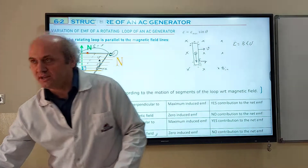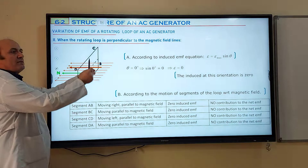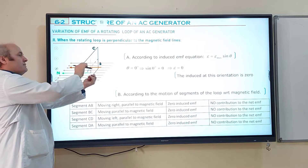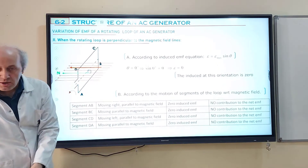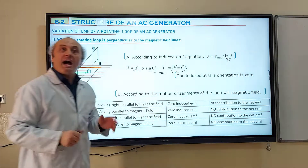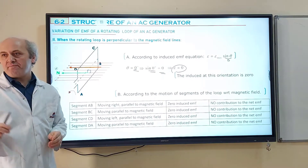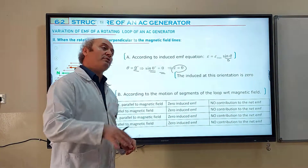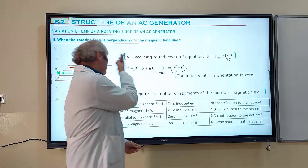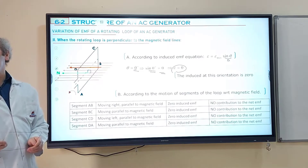What if the loop continues rotating from parallel to perpendicular? When the loop takes a position perpendicular to the magnetic field lines, the normal of the loop is in the same direction as the magnetic field. The angle between the two vectors is zero. Sine zero equals zero, so EMF is zero. When this rotating loop takes a position perpendicular to the magnetic field lines, the induced EMF becomes zero, and the magnetic force acting on the electrons is also zero.